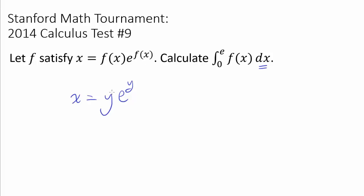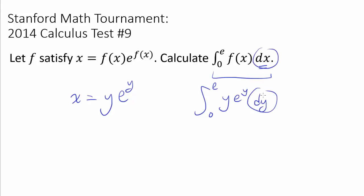One thing I do see is that if this were the integral from 0 to e of y·e^y dy — so instead of dx, if we had dy and were integrating y times e to the y — then this is extremely easy, because we know how to integrate y times e to the y. But that's not what we have; we have the integral with respect to x.